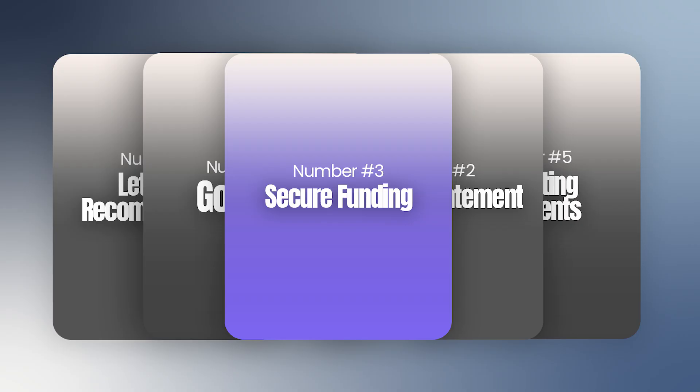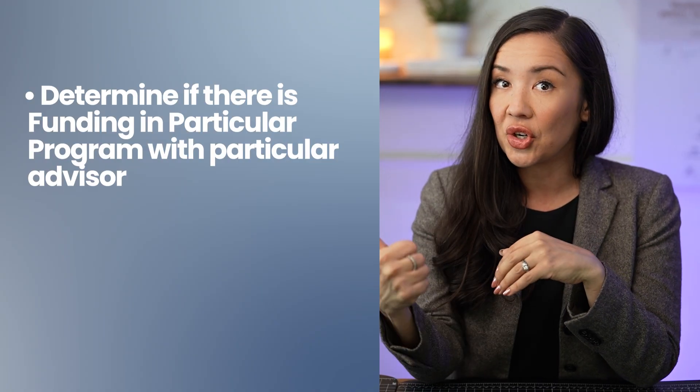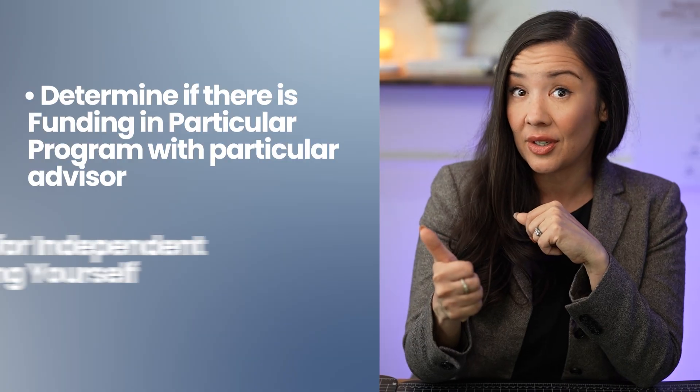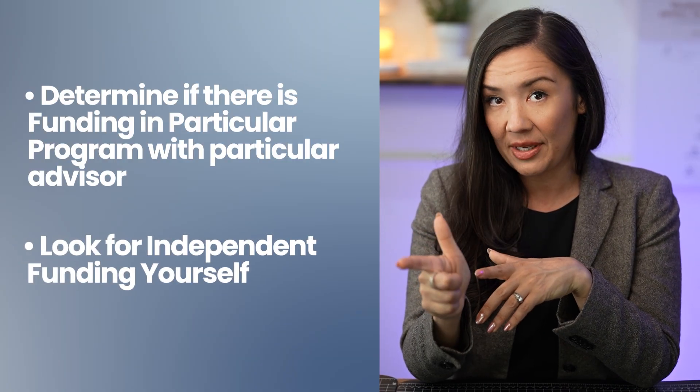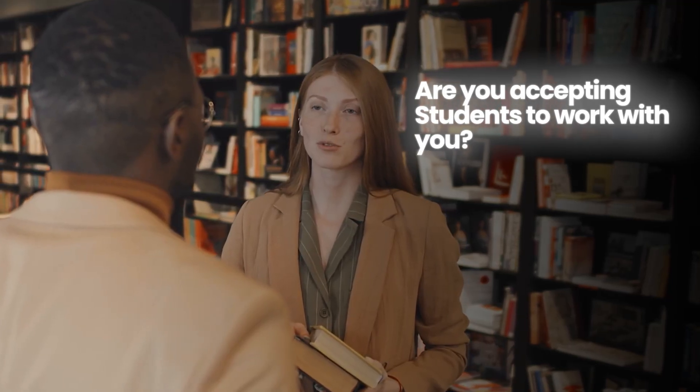The third item on the checklist — new for 2025 — is to try to secure funding. We are in a world where funding is incredibly limited. The trick is determining if there's funding in a particular program with a particular advisor. There might not be this year, so look for independent funding yourself. You're going to have to do more work to determine if a professor is accepting students. You don't have to ask if they have funding — just ask if they're accepting students.